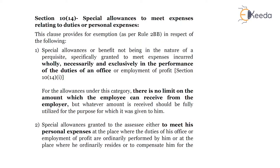The second part covers special allowances received by the employee which will be taxable subject to the limit prescribed by the rule. If the allowance exceeds the prescribed limit, the same will be taxable in the hands of the employee. For the second category, it doesn't matter whether any expenses are incurred by the employee or not. As soon as it exceeds the prescribed limit, it will be taxable, and you will get a standard deduction up to the limit prescribed.